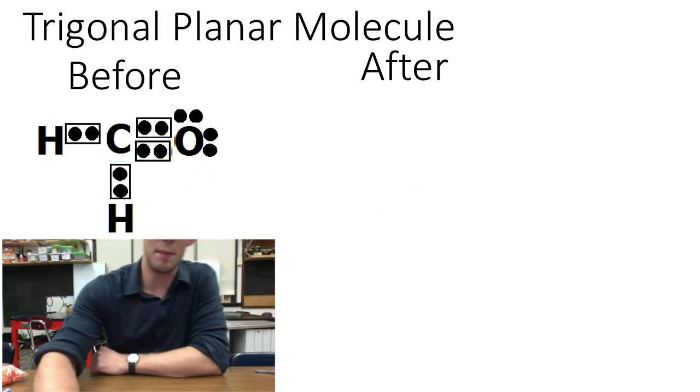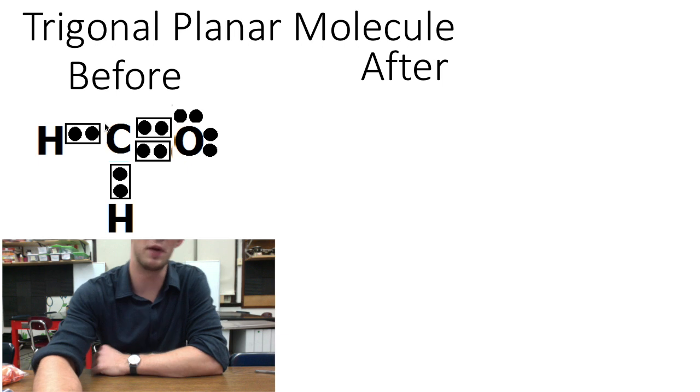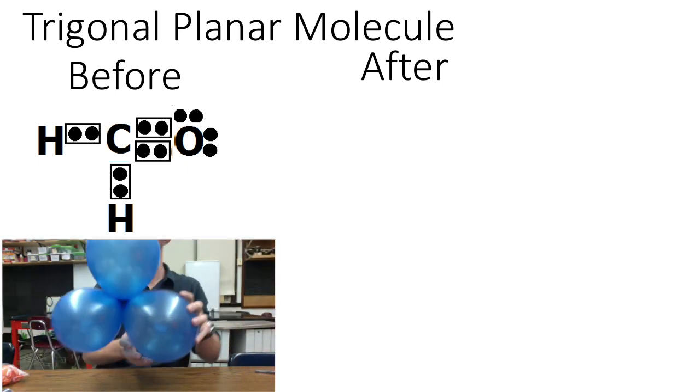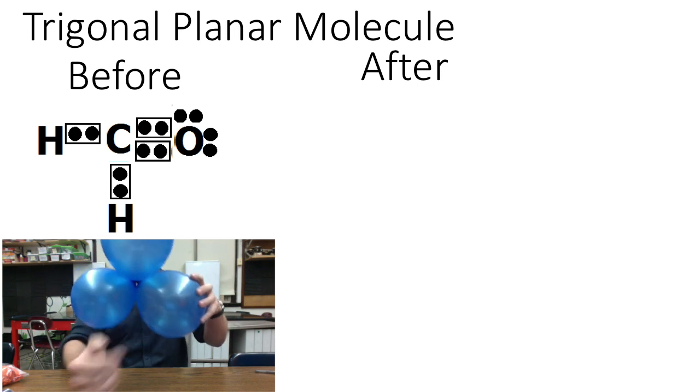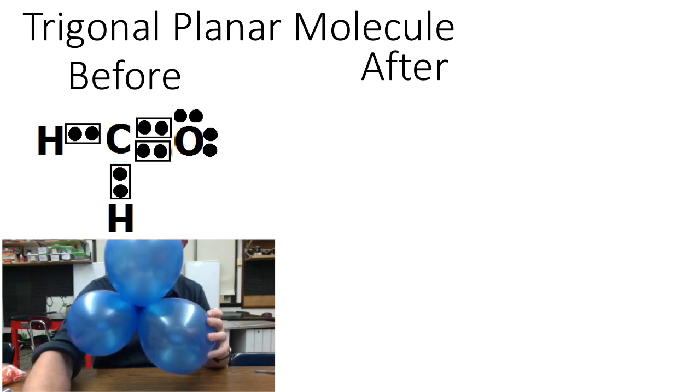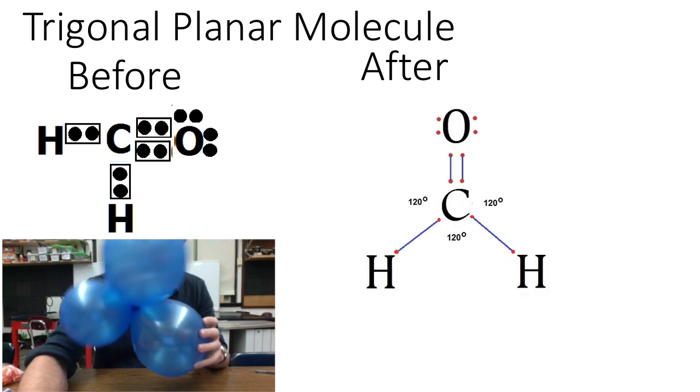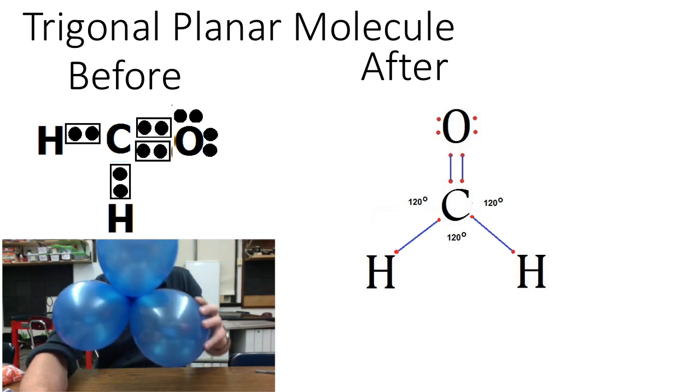The next type of molecule is a trigonal planar molecule, which occurs when three different elements bond to a single central atom. So in this case a carbon bonded to two hydrogens and an oxygen. And these three groups of electrons will repel as far away from each other as possible, which in this case is 120 degrees.